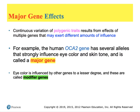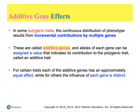Traits under polygenic multiple-gene control also show continuous variation. Within many of these systems there is a demarcation between genes with major effects and other genes that tweak those effects. The major genes are called major genes, and the minor genes are called modifier genes, because they simply modify what the major genes have instilled. With some polygenic traits, the results reflect the additive nature of multiple additive genes and their alleles.